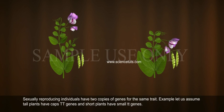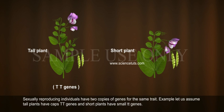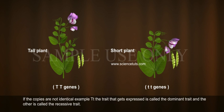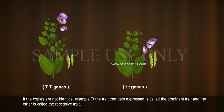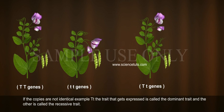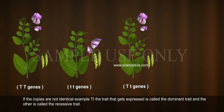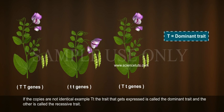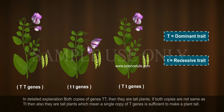Sexually reproducing individuals have two copies of genes for the same trait. For example, let us assume tall plants have genes TT and short plants have genes tt. If the copies are not identical, for example, T and t, the trait that gets expressed is called the dominant trait and the other trait is called the recessive trait.